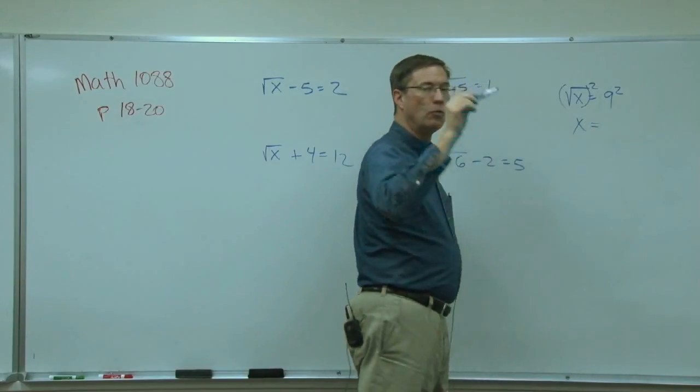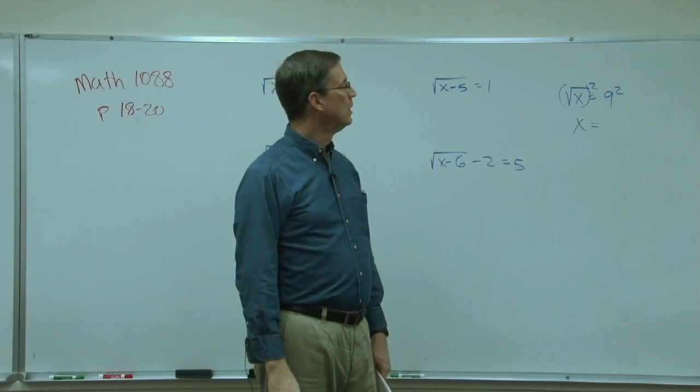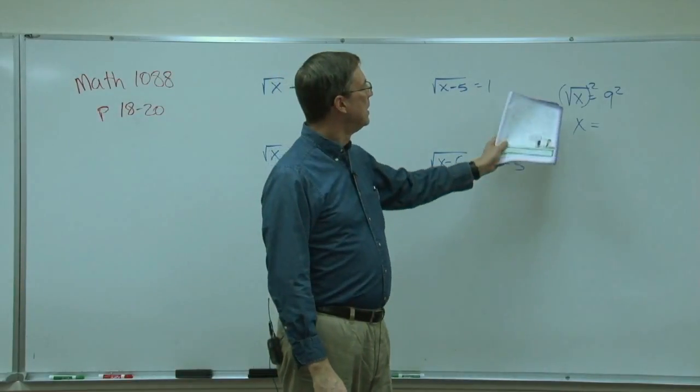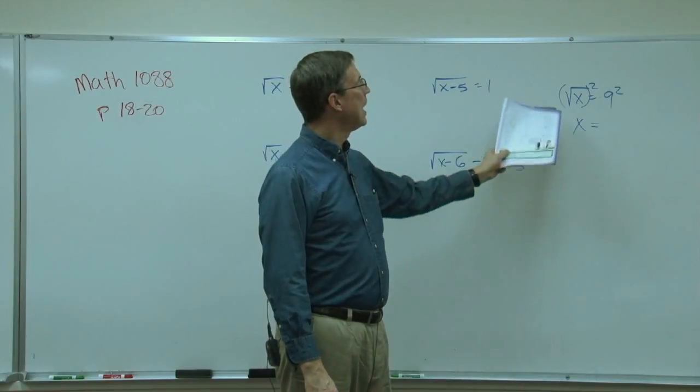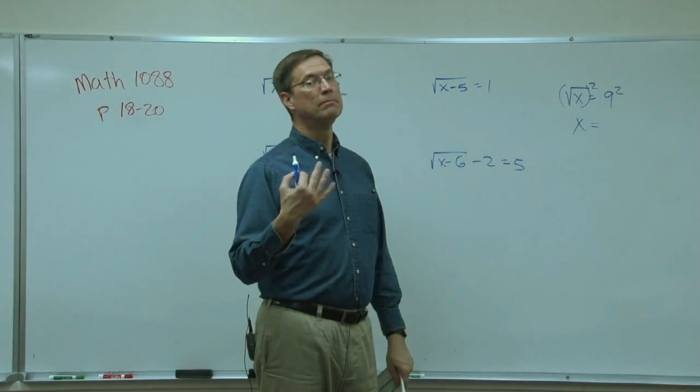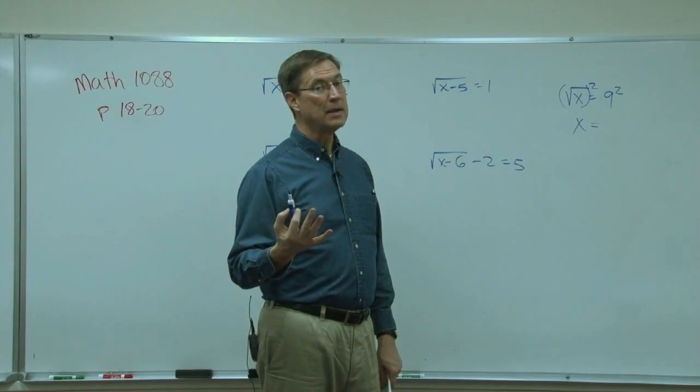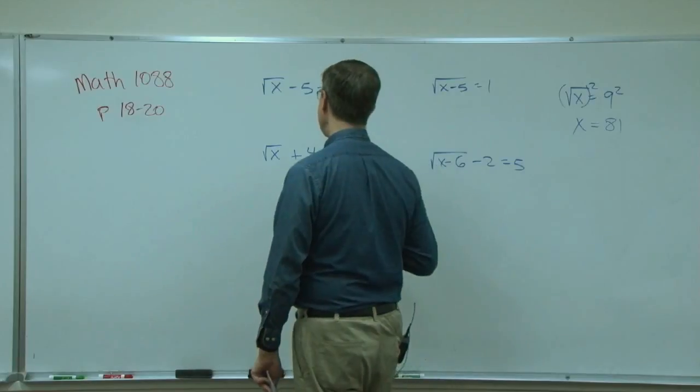So now the x just pops out from under the radical. That's what that symbol is called, kind of looks like a check mark with a line over it. So that symbol's the radical symbol. The x pops out, 9 squared is 81.